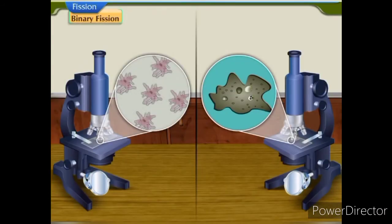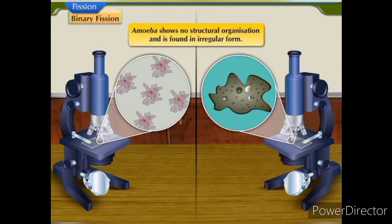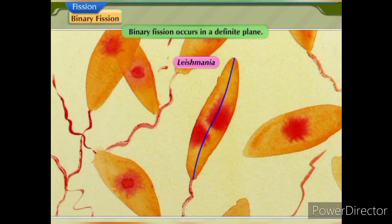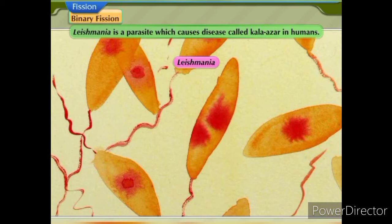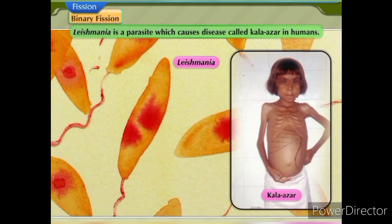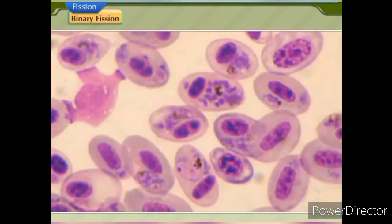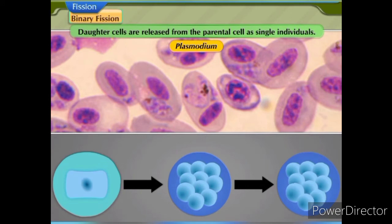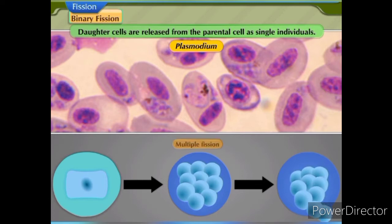By observing both slides, we infer that amoeba shows no structural organization and is found in irregular form. Few unicellular protozoans, like Leishmania, show a more organized body with a whip-like structure at one end of the cell — in such organisms, binary fission occurs in a definite plane. Leishmania is a parasite which causes Kala Azar in humans. Certain unicellular organisms, like Plasmodium — which is a malarial parasite — divide simultaneously into many daughter cells, which are released from the parental cell as single individuals. This process of reproduction in Plasmodium is called multiple fission.